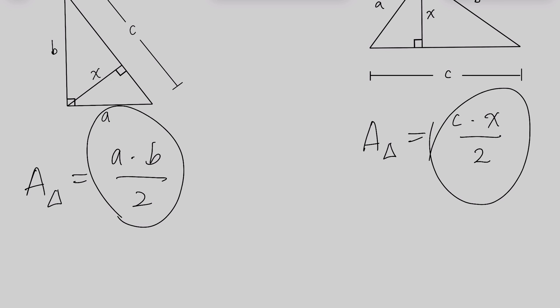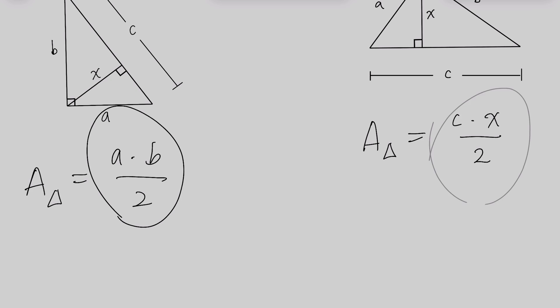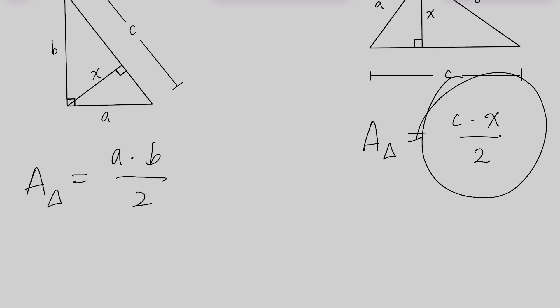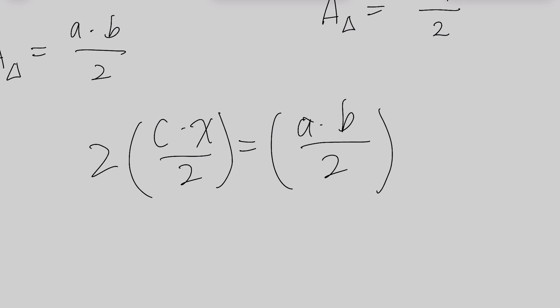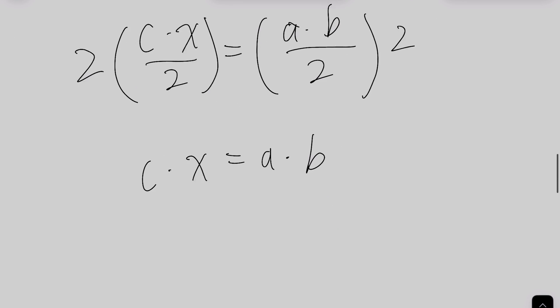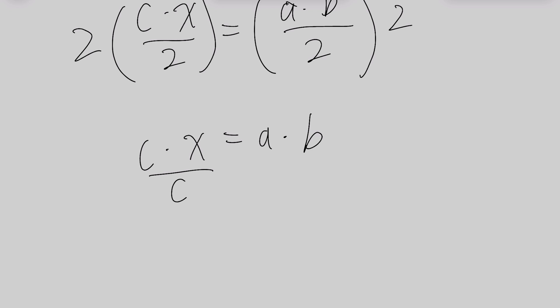Since these two expressions represent the same thing — the area of this triangle — we can set them equal to each other: C times X divided by 2 equals A times B divided by 2. Multiply both sides by 2: C times X equals A times B. Since we're solving for X, divide both sides by C, and you get X equals A times B divided by C, which is our formula. This works for any right triangle.